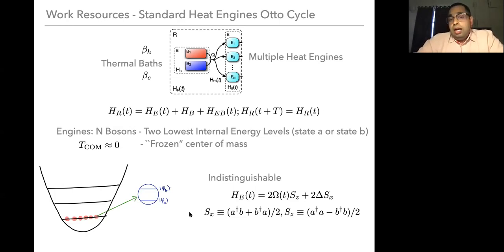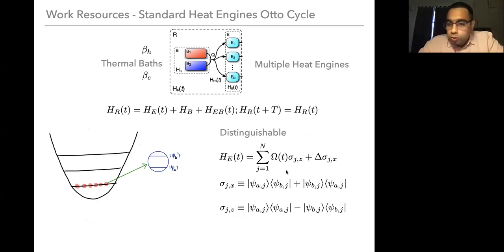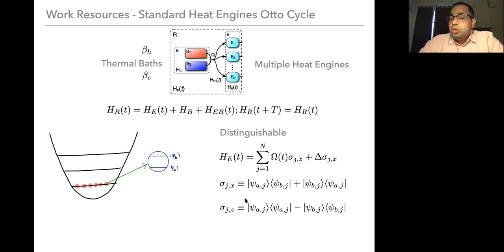I want to compare the performance of such an indistinguishable ensemble with an equivalent ensemble where the engines are distinguishable. For this, imagine pin impurities inside a solid state matrix, or solid state qubits whose positions you can easily distinguish — an array of two-level systems. The same protocol will be used for both cases, but here the total Hilbert space is going to scale as 2 to the N.